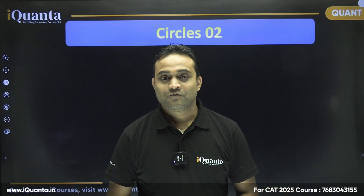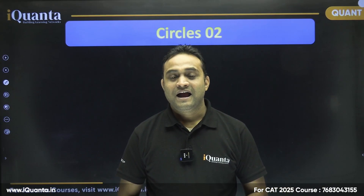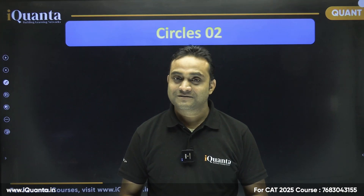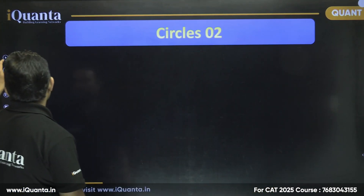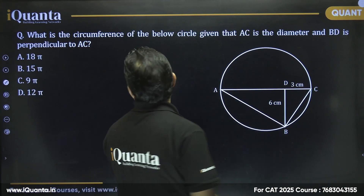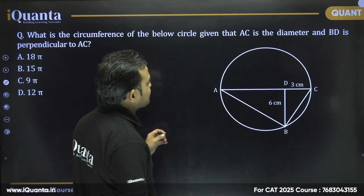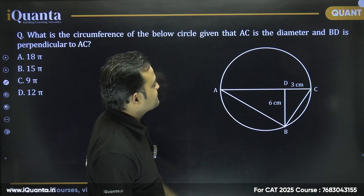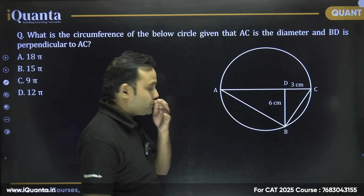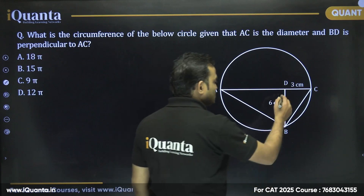Hello everyone, welcome to the Geometry for CAT series. Let's continue with our questions on circles. For today's session, our first question is: what is the circumference of the below circle, given that AC is the diameter and BD is perpendicular to AC?